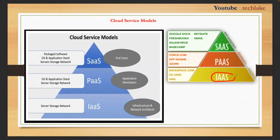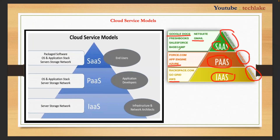Who goes for Infrastructure as a Service? Companies with good system administrators — most AWS projects fall here. Rackspace is another example. Platform as a Service is majorly for developers — most Azure projects are developer-related, though infrastructure options are also available. For Software as a Service, end users use it directly. Google has many SaaS offerings like Gmail and Google Docs, and Salesforce and FreshBooks are also examples.